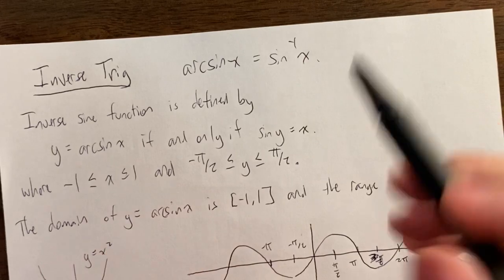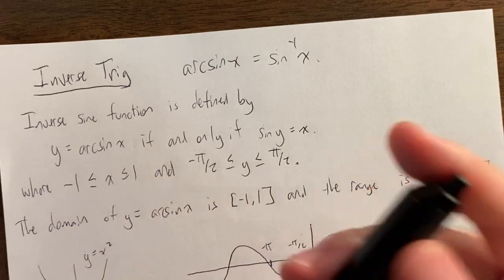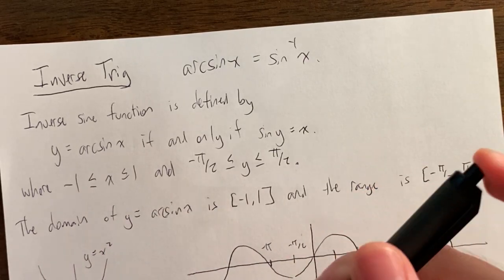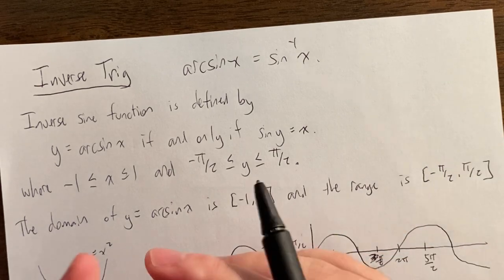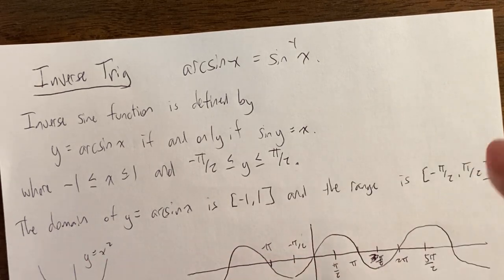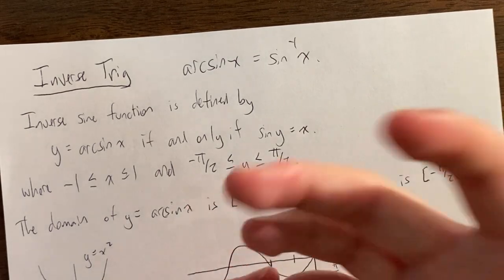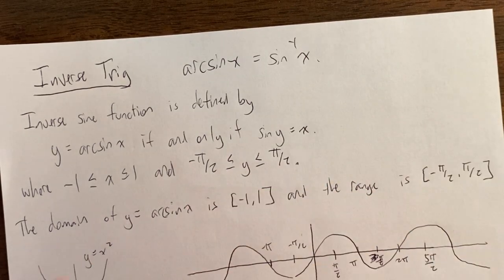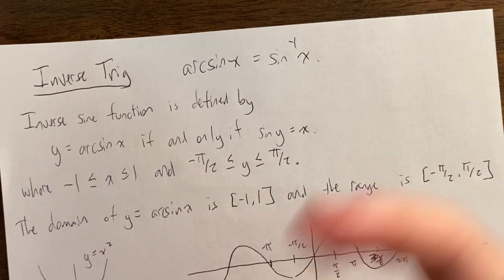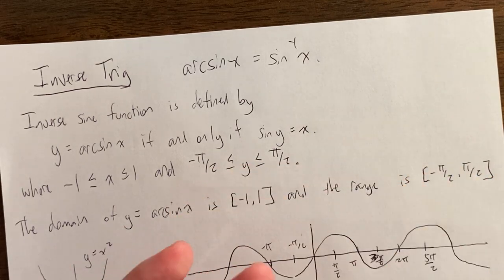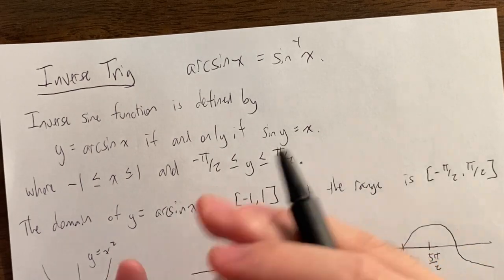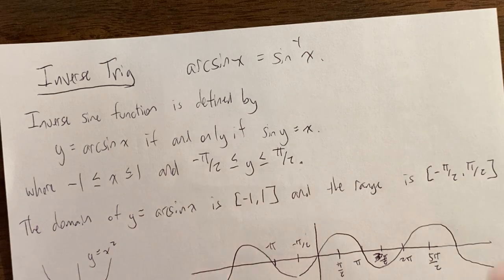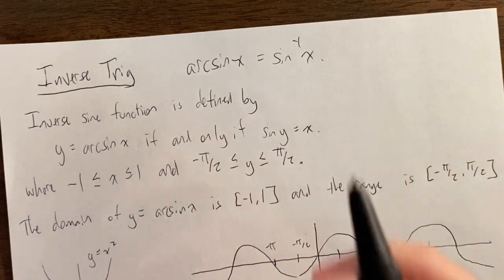So inverse trig — basically what we're going to do is work backwards from what we've been doing in the previous videos. Instead of finding sine, cosine, tangent of angles and getting numbers, we're going to start off with numbers and think backwards. We're going to think about what angles give us those particular sine, cosine, and tangent values. Our answers are going to be like pi over 4, pi over 6, negative pi over 3, instead of plugging in those angles.